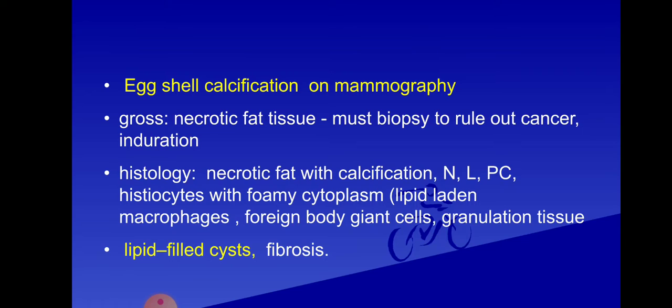In gross examination, the specimen looks like necrotic fat tissue — yellowish fatty tissue with black necrotic material. It is very important to rule out cancer.